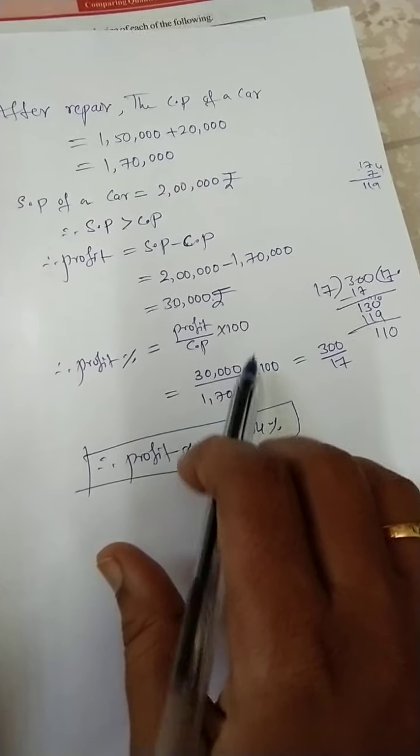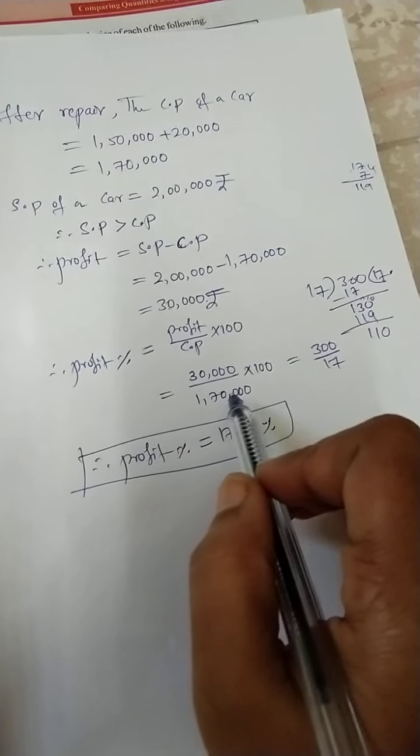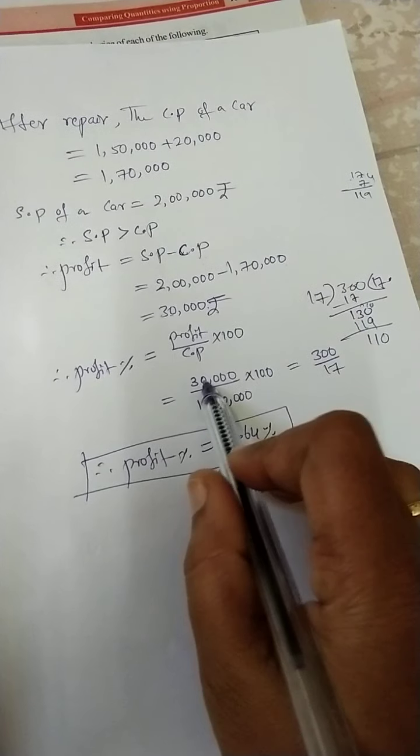Now if you do the cancellation, 4 zeros here, 4 zeros will cancel. Remaining 300 by 17.